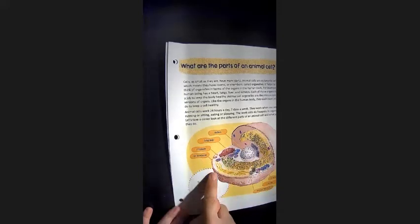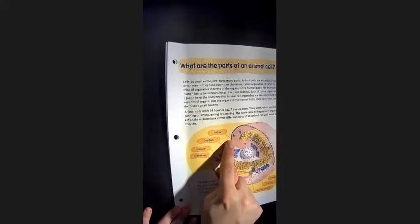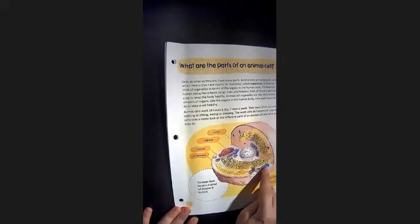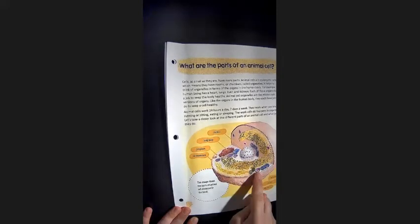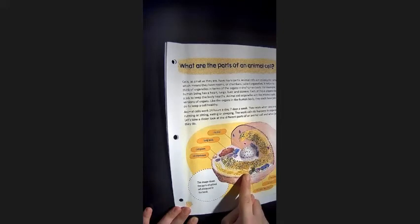the cytoplasm, the cell membrane, the mitochondria, the vacuole, and the ribosome, which are all those blue dots.